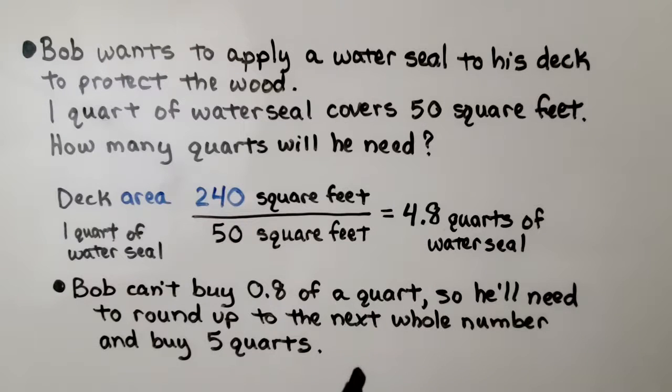But Bob can't buy 0.8 of a quart. So, he'll need to round up to the next whole number and buy 5 quarts.